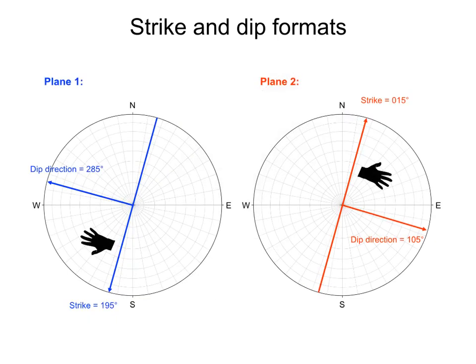These are the same planes in map view. Following the right-hand rule convention, plane 1 strikes 195 degrees and dips in a direction of 285 degrees. Plane 2 strikes 15 degrees and dips in a direction of 105 degrees.